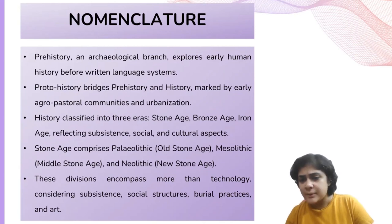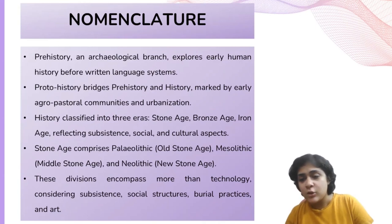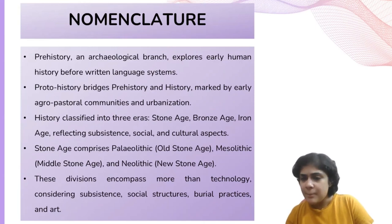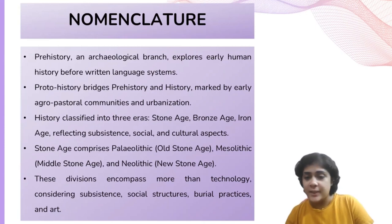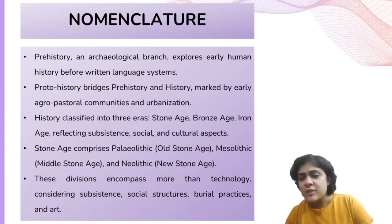Alternatively, human history can be divided into three primary periods: the Stone Age, Bronze Age, and Iron Age. These divisions encompass more than just technological stages — they signify the nature of subsistence economies, societal structures including care for vulnerable members of society, burial practices, artistic expressions, and various aspects of daily life.